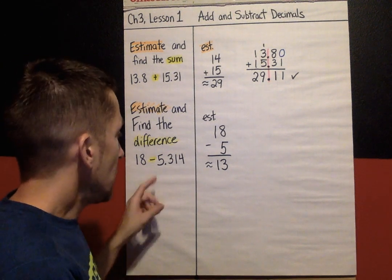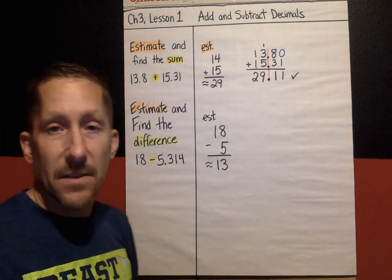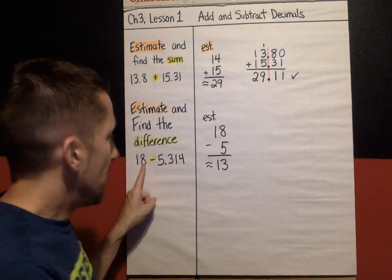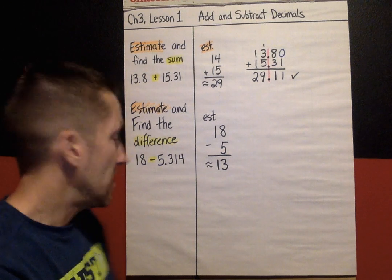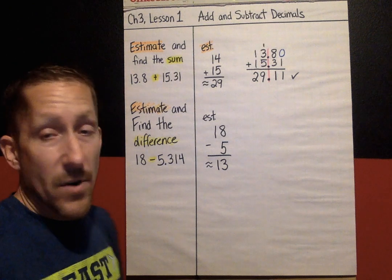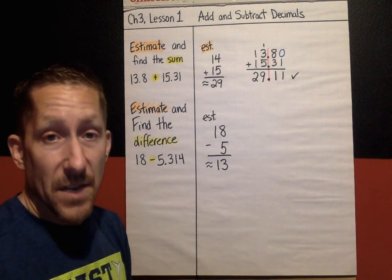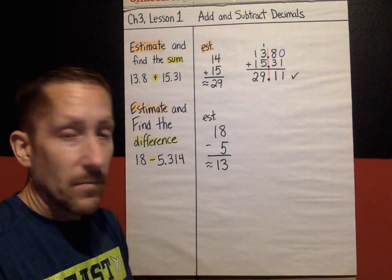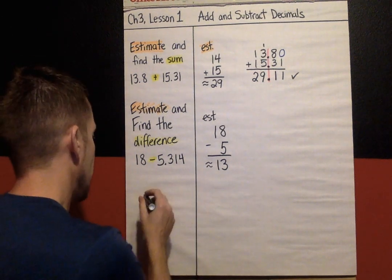Now, let's find the actual difference, not the estimate, the actual. Now, 18, there is no decimal point. So, I want to talk about that for a minute. If you don't see a decimal point, every number has a decimal point, even if you don't see it. If you don't see a decimal point, actually, let's write this down here.